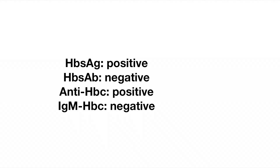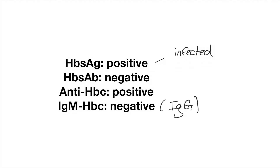In our last example, the person has a positive surface antigen — they are infected. Surface antibody is negative, which makes sense. Core antibody is positive, but the IgM is negative, meaning this person has IgG core antibodies instead. Since the core antibody includes both IgM and IgG, the presence of IgG without IgM tells us this person has a chronic infection.